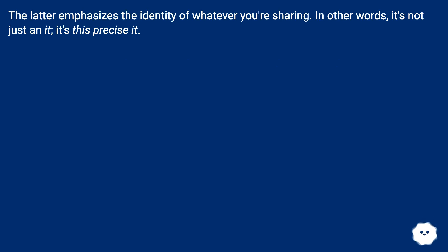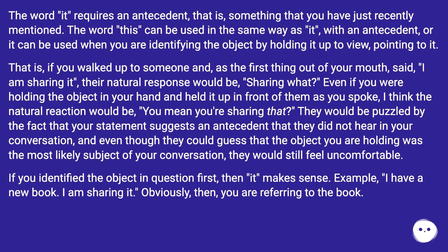In other words, it's not just an "it" — it's this precise it. The word "it" requires an antecedent, that is, something that you have just recently mentioned. The word "this" can be used in the same way as "it" with an antecedent, or it can be used when you are identifying the object by holding it up to view or pointing to it.